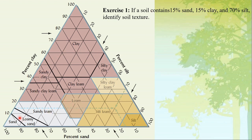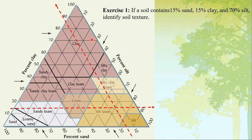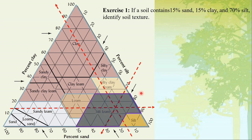For clay at 15%, we draw a line parallel to sand. For sand at 15%, we draw a line parallel to silt. For silt at 70%, we draw a line parallel to the clay axis. These three lines meet at one end point, and the texture of this soil is silt loam.